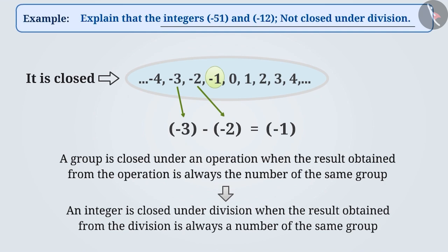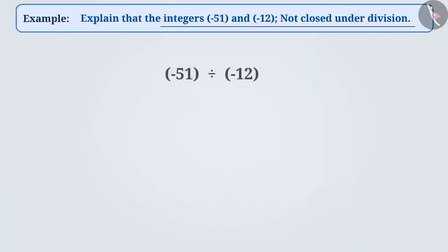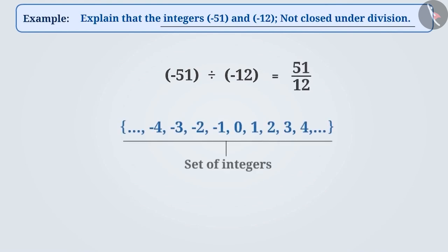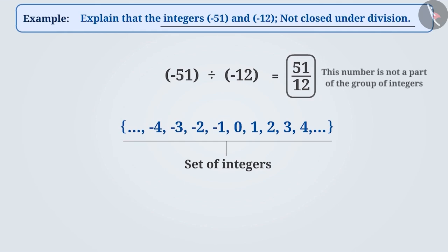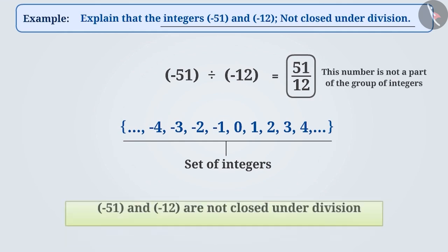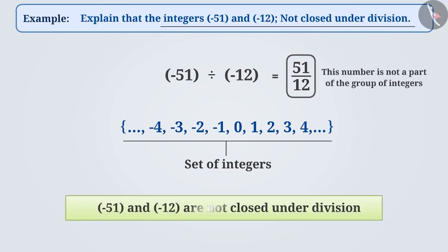To clarify that the division is not closed, first we will find the result of minus 51 divided by minus 12. This results in 51/12. This number is not a part of the group of integers. Since the result obtained by division of integers is not a part of the same group, minus 51 and minus 12 are not closed under division.